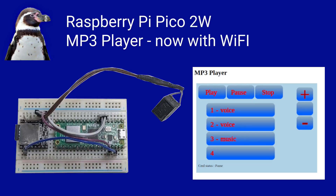In my earlier video I explained about how I've created a MicroPython library allowing me to control a DF Player Mini MP3 player with a Raspberry Pi Pico. In this update I've made some changes to the library, tested it with the Raspberry Pi Pico 2W, and created a demonstration program showing how you can use the Pico 2W as a web server to control the MP3 player.